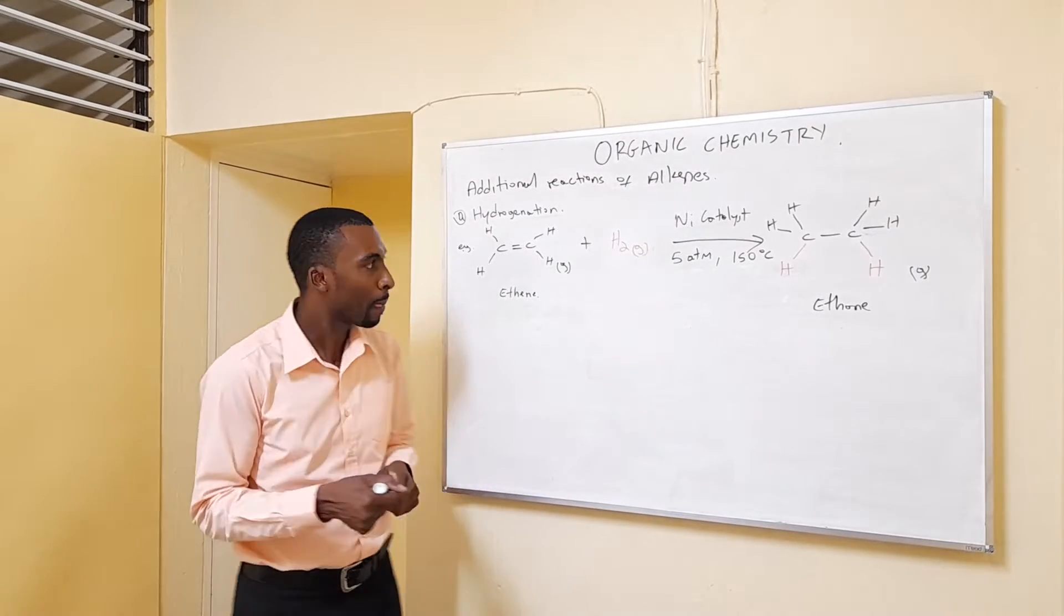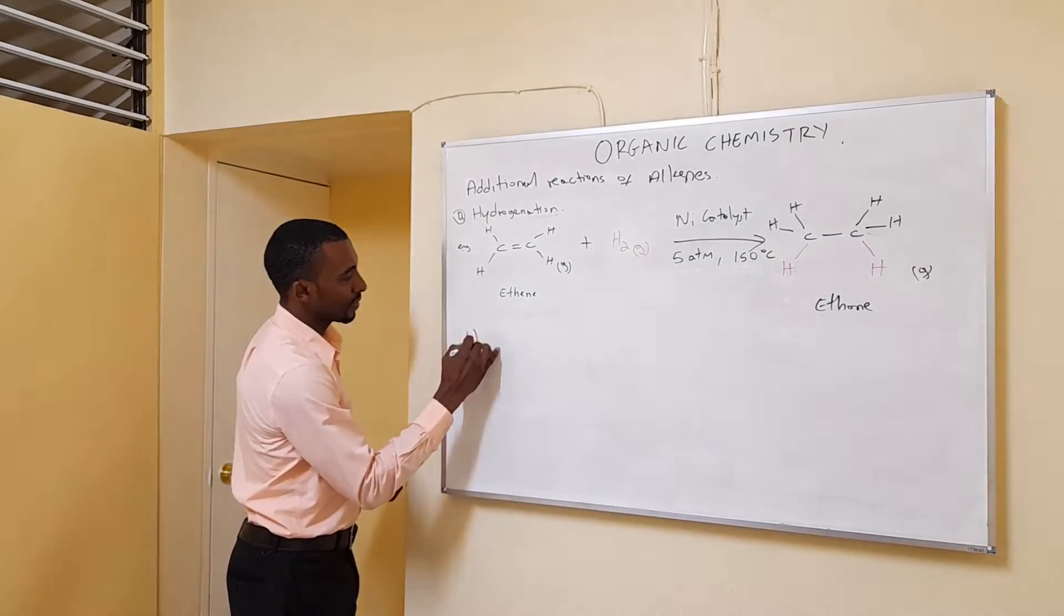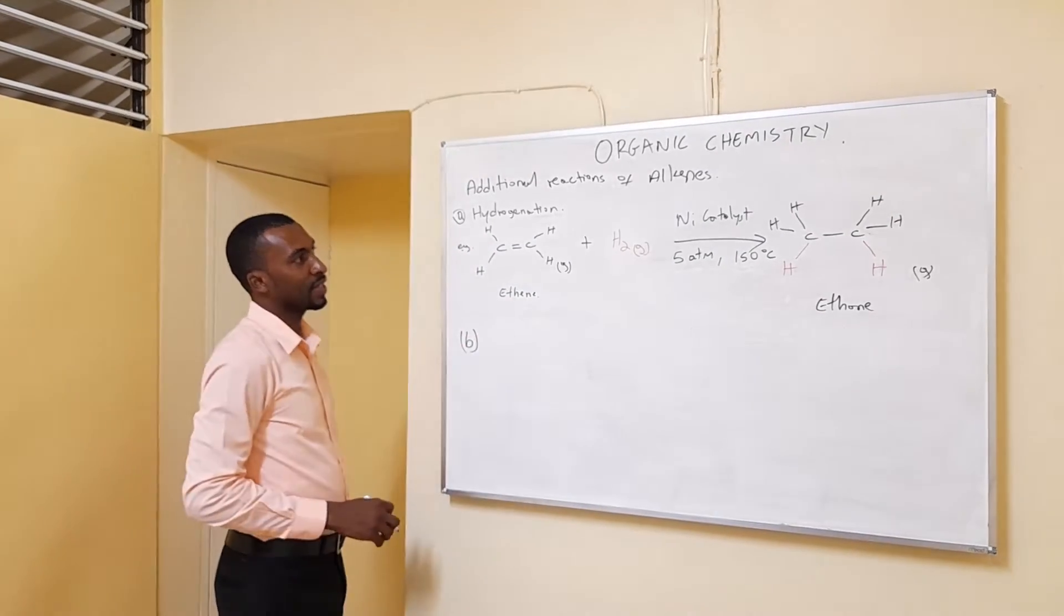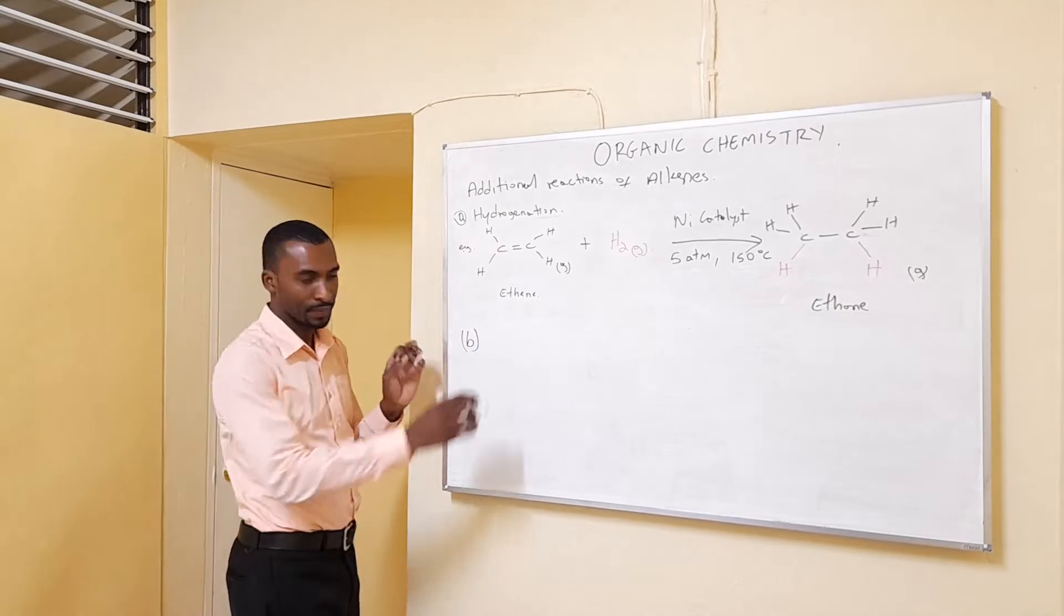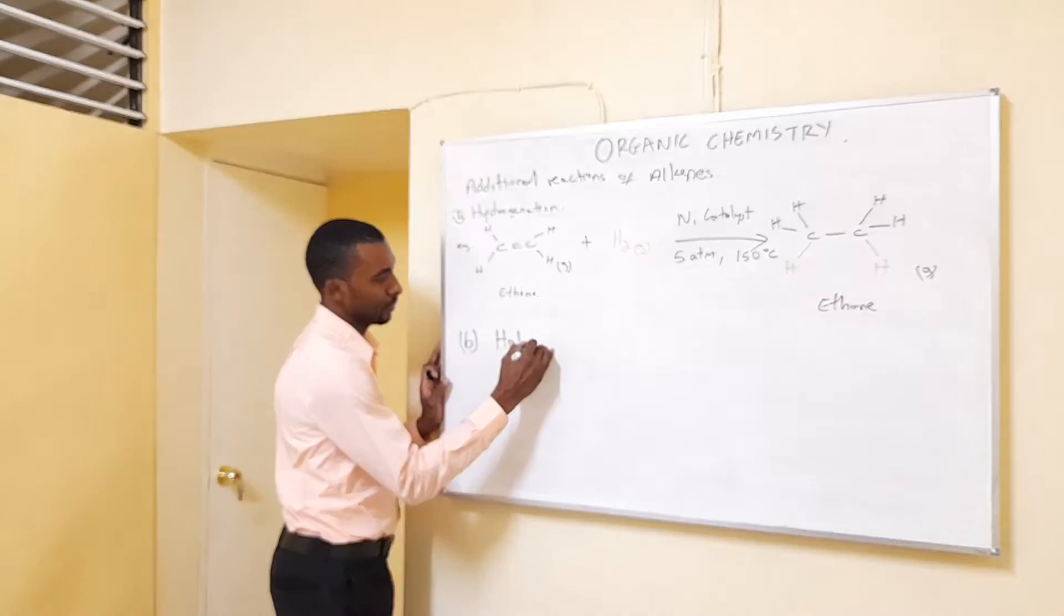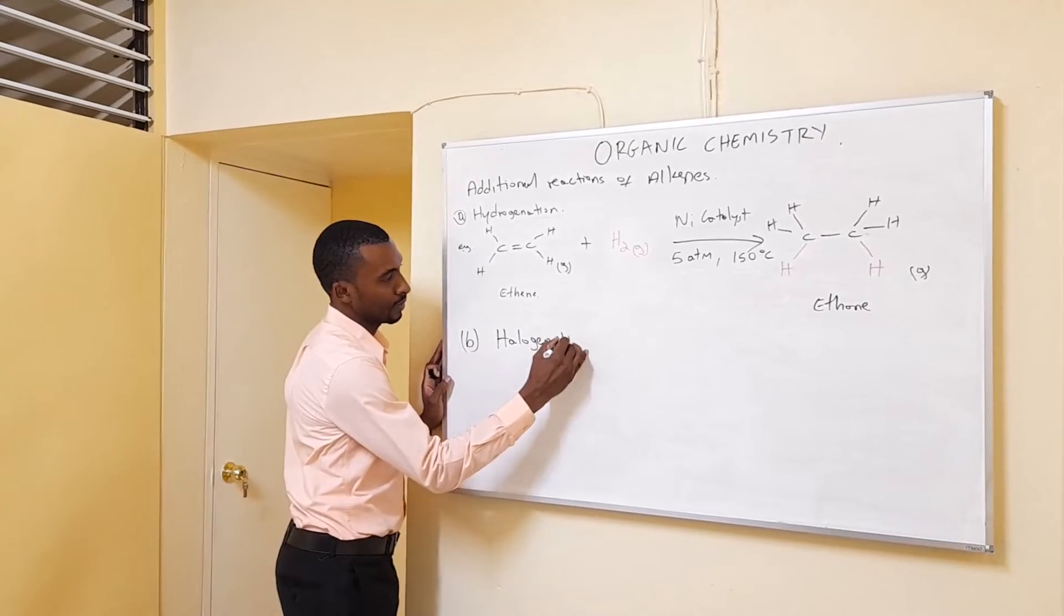In the next grade class. So next, the second type of reaction that we had there, what was it? The halogen.